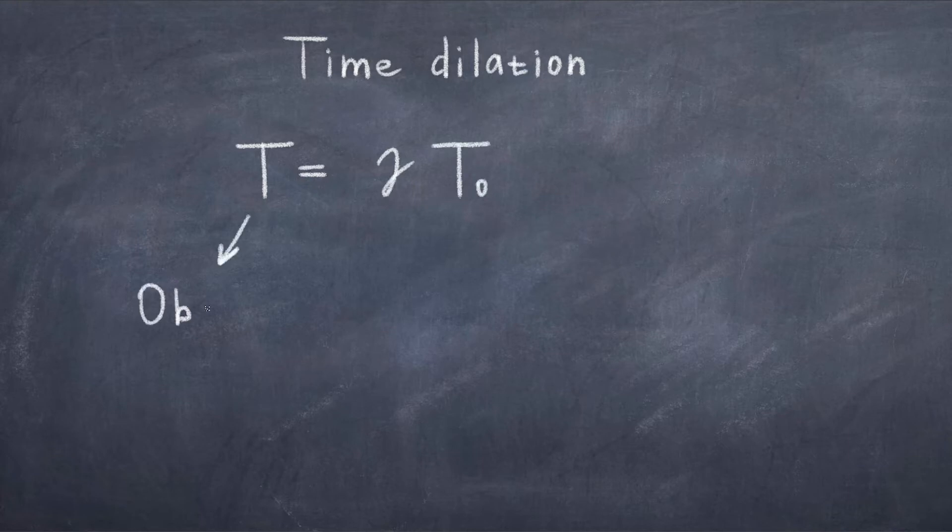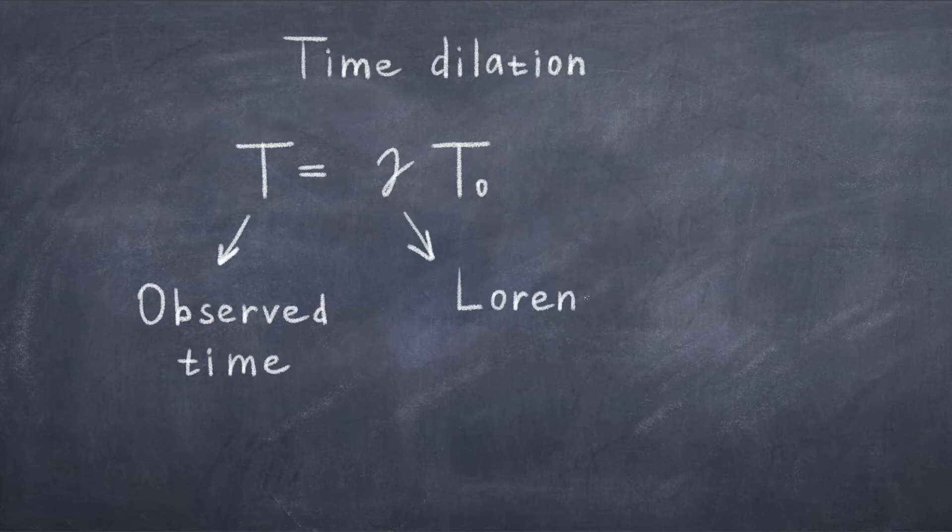This leads to the obvious question, what happens to time? The answer is that the opposite happens, and we can express the time dilation as t equals gamma times t0, where t is the perceived time by an observer and t0 is the actual time or proper time. Here we see that if you move really fast, an observer will see you being older than you really are.